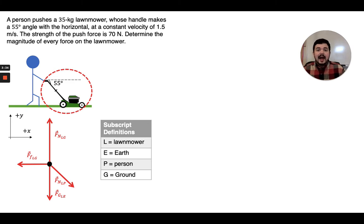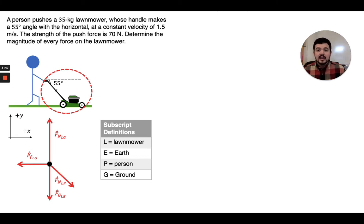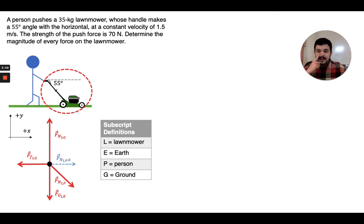Now to analyze how our forces are balanced in the x and y directions, we're going to need to look at our angled force and break it up into its x and y components. We can draw in the x component for the normal force on the lawnmower by the person by looking at that down-and-to-the-right arrow and asking how much of it points to the right. So there's our x component, starting at the dot and going all the way over to the right edge of that diagonal normal force arrow.